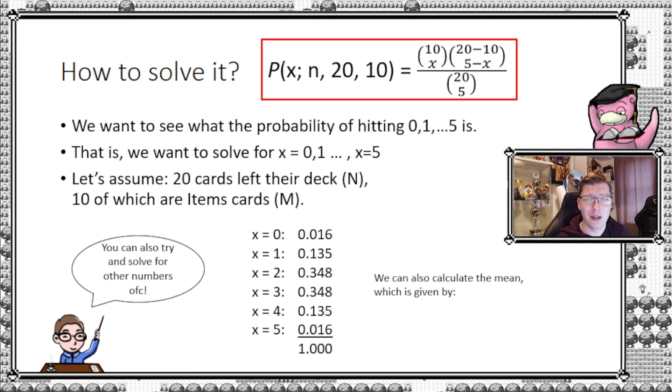We can also calculate the mean. The mean of a hypergeometric distribution is given by the following formula: lowercase n times M divided by N. You can just plug in the numbers and you get two and a half. It should also somewhat be obvious in this case given the numbers that I chose, but the moment you alter this, then this formula becomes more relevant.